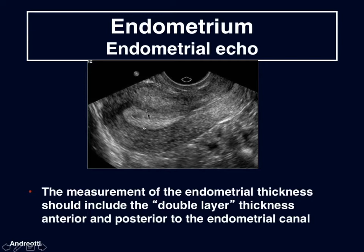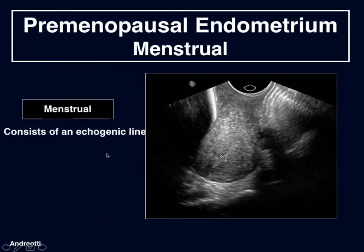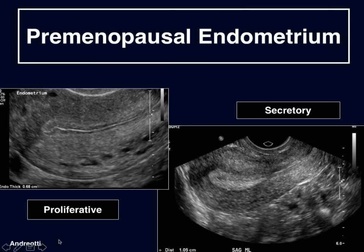Here we can see this endometrium — since it's completely echogenic, it is very easy to place our calipers on either side of what we call the endometrial echo. According to past reports, this should not exceed more than about 14 to 16 millimeters. Here we can see the very thin echogenic line at the time of menstruation, the proliferative endometrium in the first phase of the menstrual cycle which is predominantly hypoechoic around the cavity, and the secretory endometrium which fills in with echoes following ovulation.